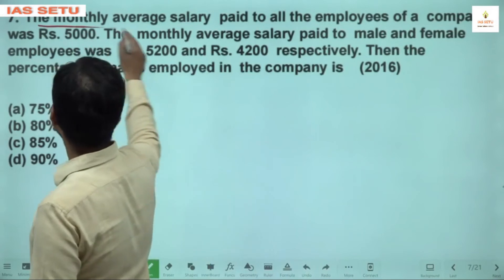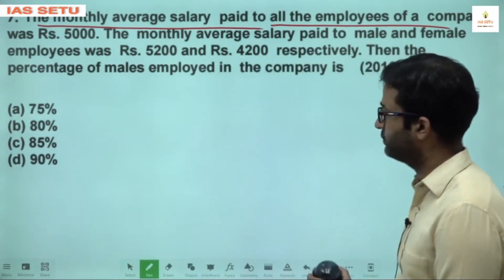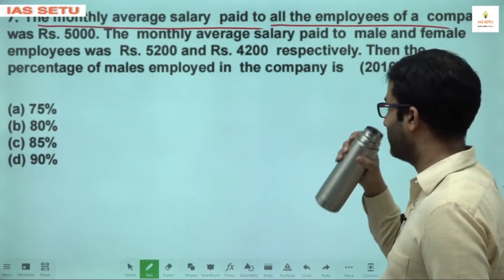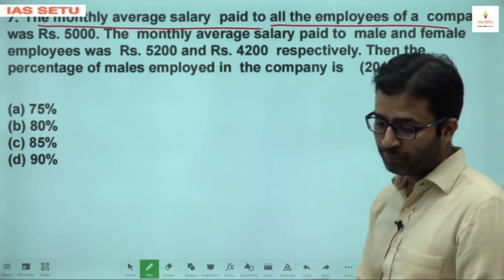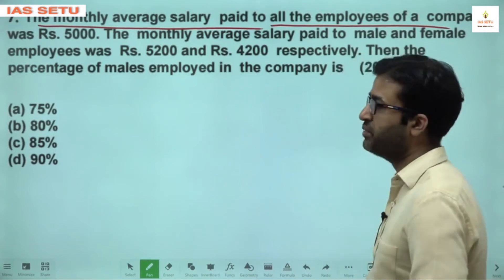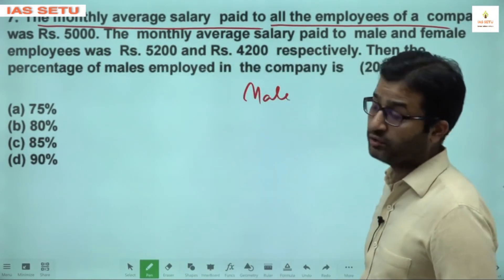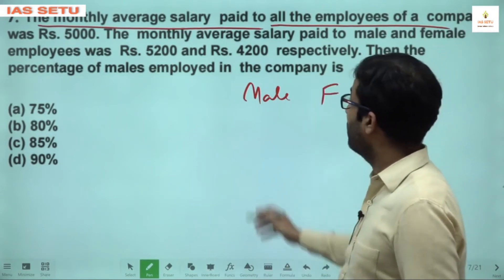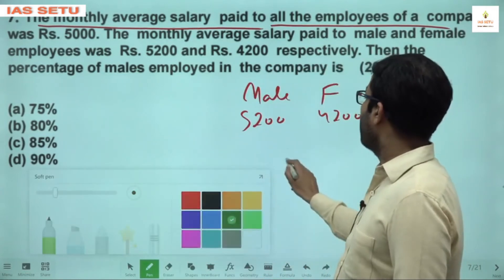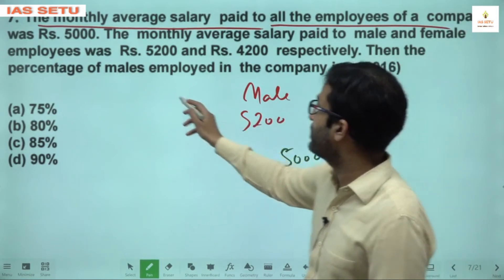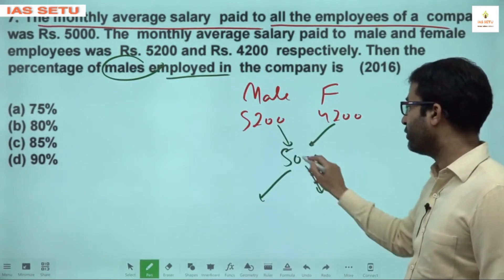Question 7: The monthly average salary paid to all employees of a company was Rs. 5000. The average for male employees was Rs. 5200 and for female employees Rs. 4200. I'll use the allegation method. 5200 − 5000 = 200 and 5000 − 4200 = 800.